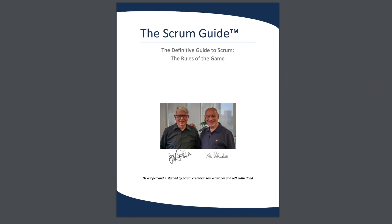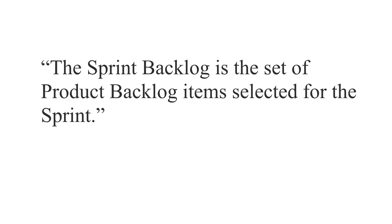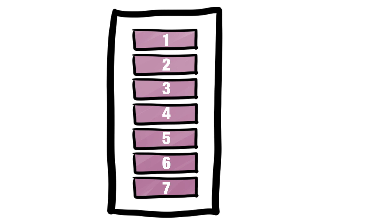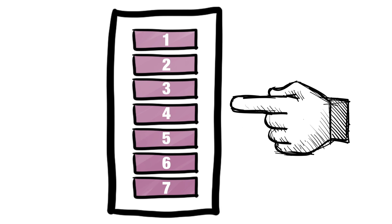Let's just check in with the Scrum Guide. The Sprint Backlog is the set of Product Backlog items selected for the Sprint. Two properties of the Product Backlog and its contents are useful when it comes to selecting items: it's a prioritized list with the most important items appearing towards the top, and the items — certainly those towards the top of the list — are sized.